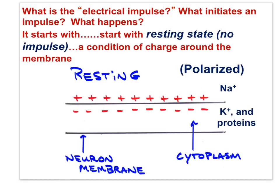So what is the electrical impulse, and what initiates an impulse? To understand the nature of an impulse, we must start with the resting state — the condition where there is no impulse happening. It's a condition of charge around the membrane of the neuron. Notice that the membrane has more positive charge outside, and more negative inside the cell. This charge difference is known as the polarized state.